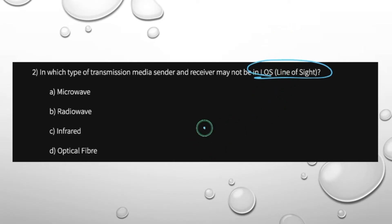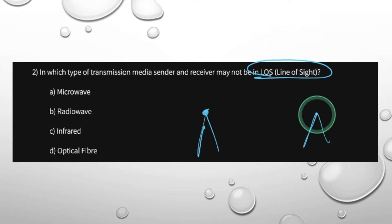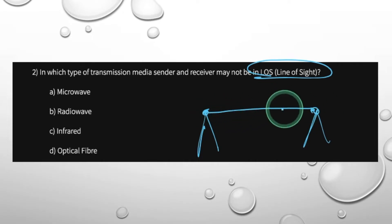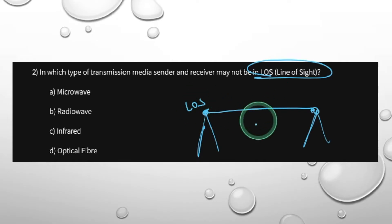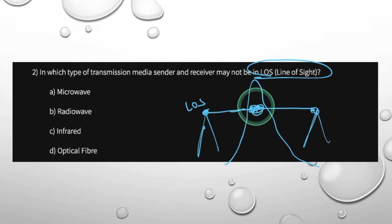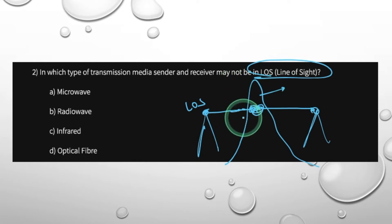What is line-of-sight? This is a sender and this is a receiver — there is a visible contact between them. That is called line-of-sight. But in some cases, there is no line-of-sight required.